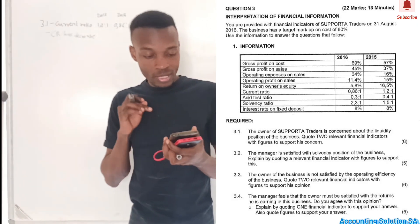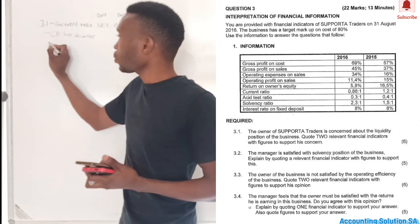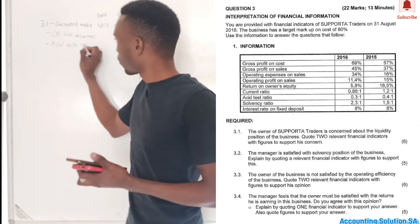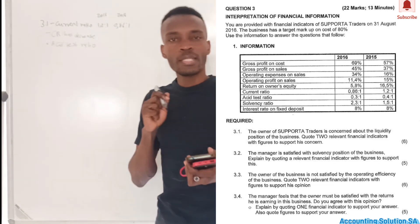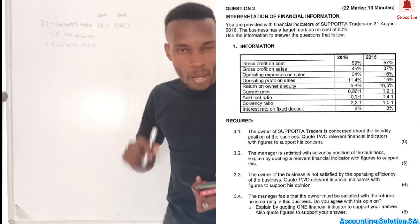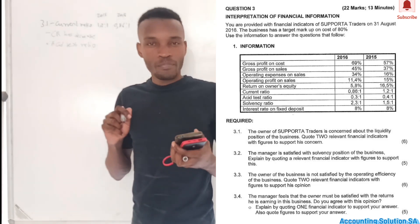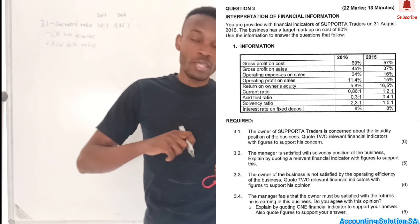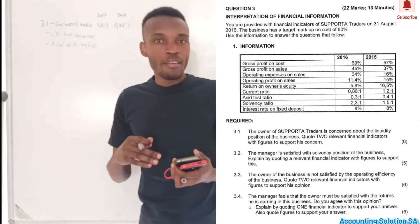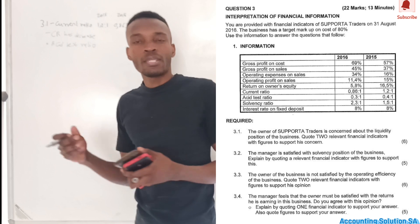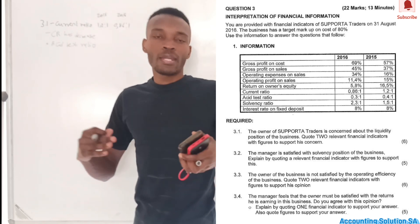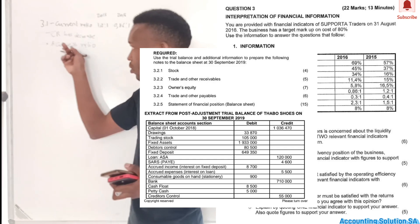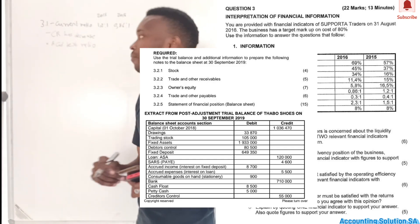We are not done — remember it's worth six marks, so we also have to analyze the acid test ratio. The acid test ratio is similar to the current ratio, but under the acid test ratio we test if we can pay short-term debt without including inventory. We exclude inventory because we assume it may not be easily convertible to cash — for example, bread could expire and cannot be converted to cash.